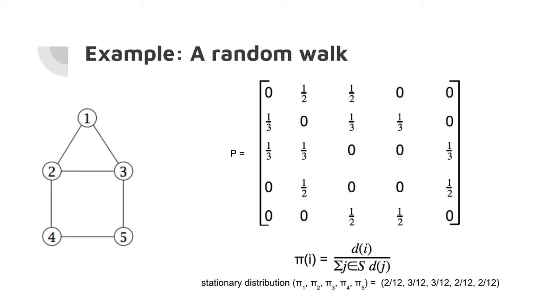This formula for finding the stationary distribution of a random walk, di over the sum of all the dj, means that your number of degrees for a particular state is the number of links that state has. So 1 has 2 links—it's linked to state 2 and state 3—so it has a degree of 2. State 2 has 3 links: it's linked to 1, 3, and 4, so it has a degree of 3. Your denominator is twice the number of total links in the system. There are 6 lines connecting our 5 states, and 2 times 6 is 12.